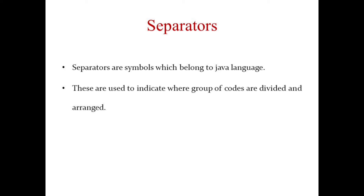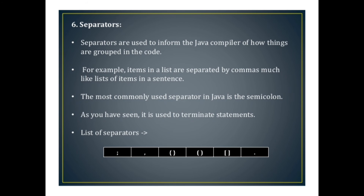Separators are symbols which belong to the Java language. They are used to indicate where groups of code are divided and arranged, and to inform the compiler of how things are grouped in the code. For example, items in a list are separated by commas, similar to a list of items in a sentence.